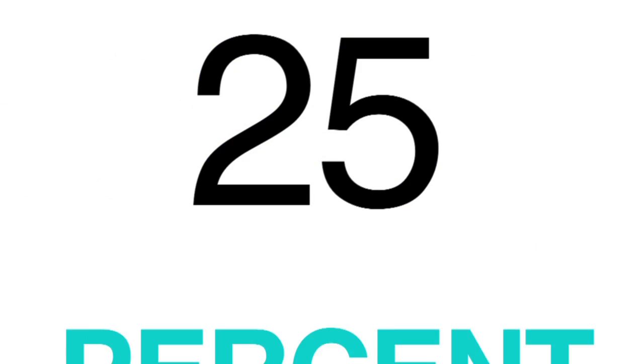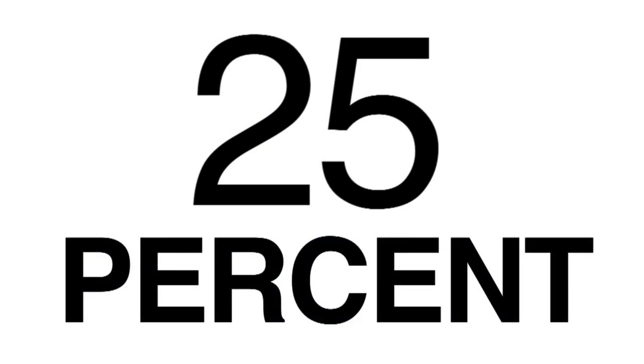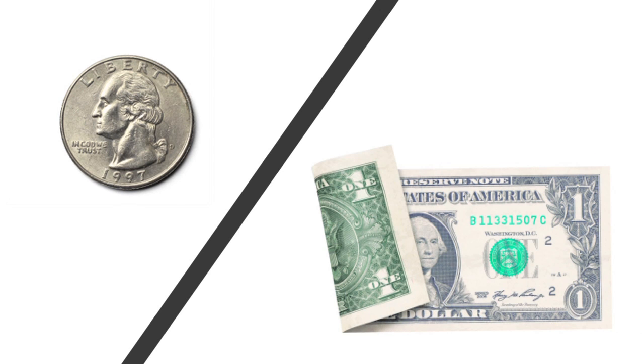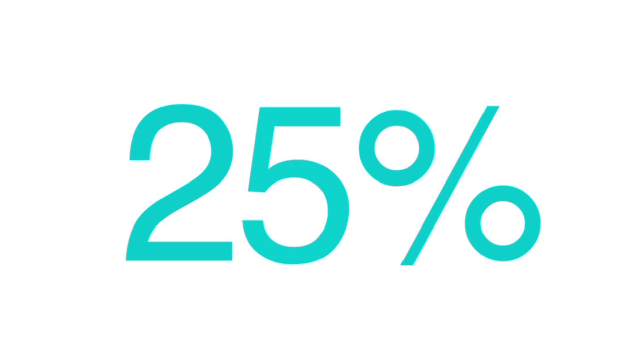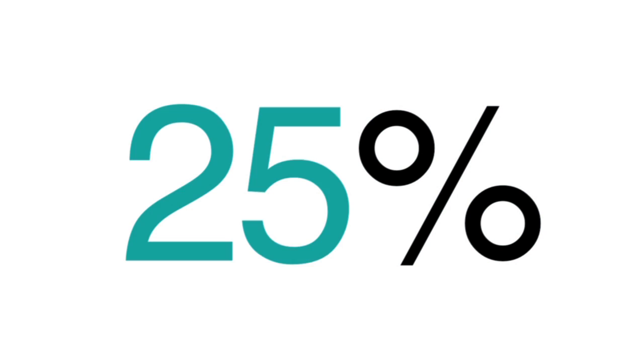If you want to write out 25%, or 25 parts of a hundred, it would look like this. The percent sign is written to the right of the percent number.